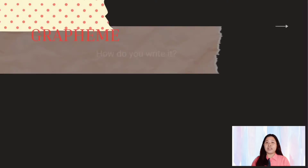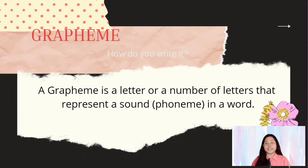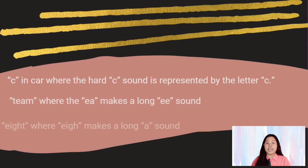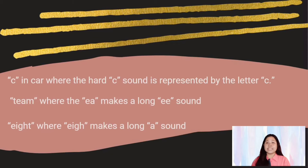The second topic is grapheme, which I entitled 'How Do You Write It.' A grapheme is a letter or a number of letters that represent a sound, or phoneme, in a word. Another way to explain it is to say that a grapheme is a letter or letters that spell a sound in a word. You use the letter names to identify graphemes, like the letter C in the word 'car,' where the hard C sound is represented by the letter C.